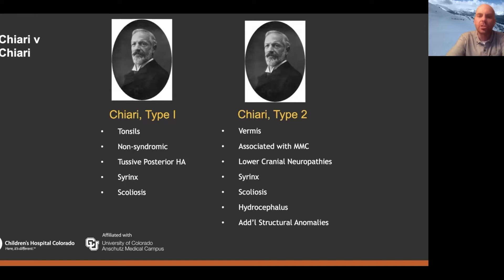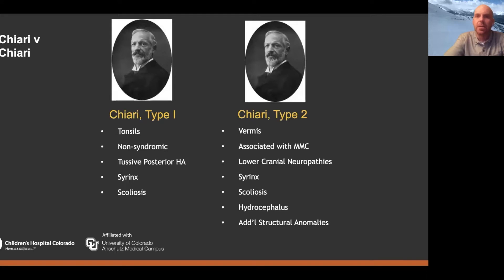Most patients who have Chiari 1 don't have a lot of other associated conditions. So it's not something that's part of a greater syndrome in most cases, and we'll pretty much stick to the more bread-and-butter stuff in this talk. Whereas Chiari 2 is universally associated with myelomeningocele, and that obviously comes with a host of other signs, symptoms, and neurological malformations.